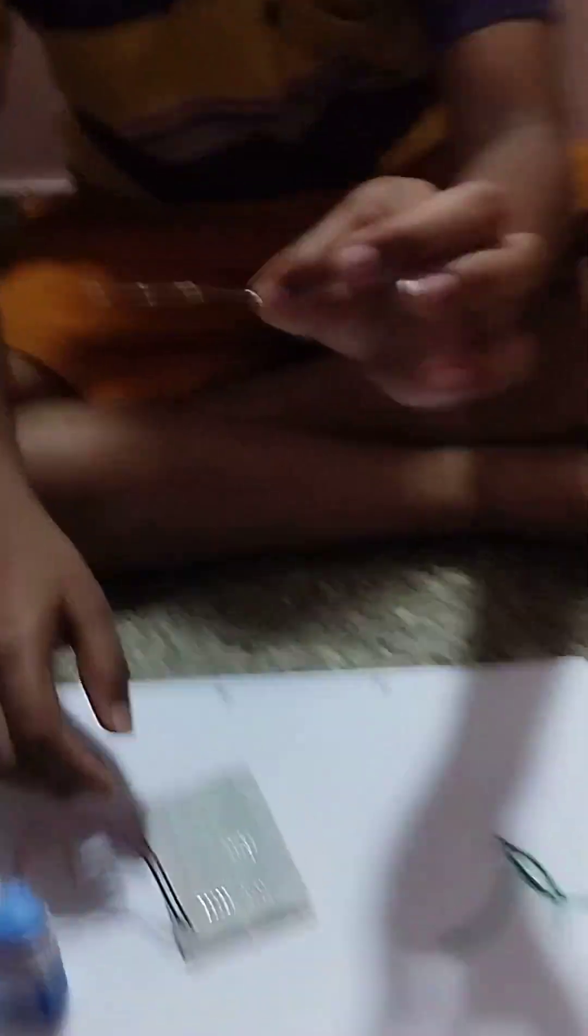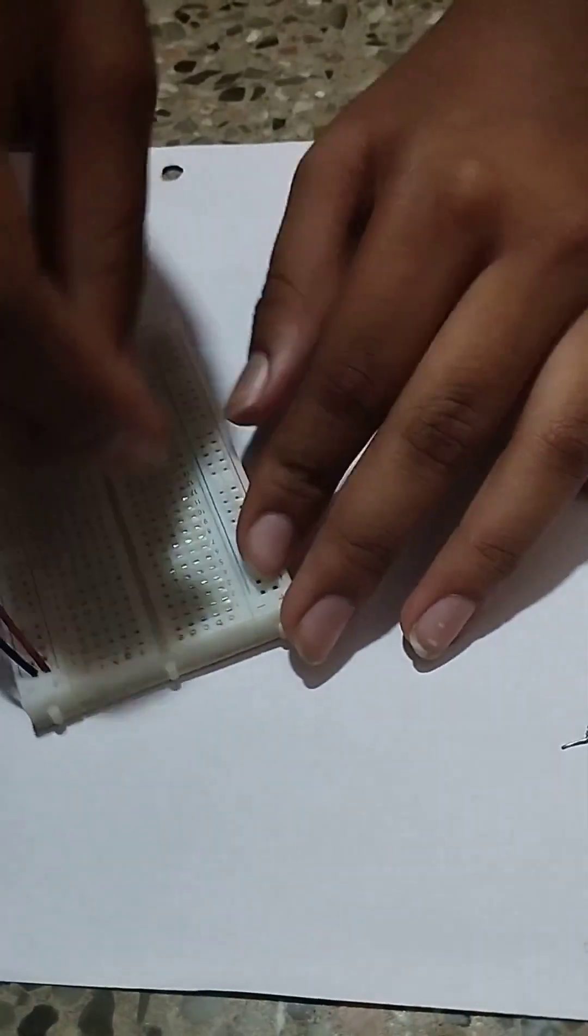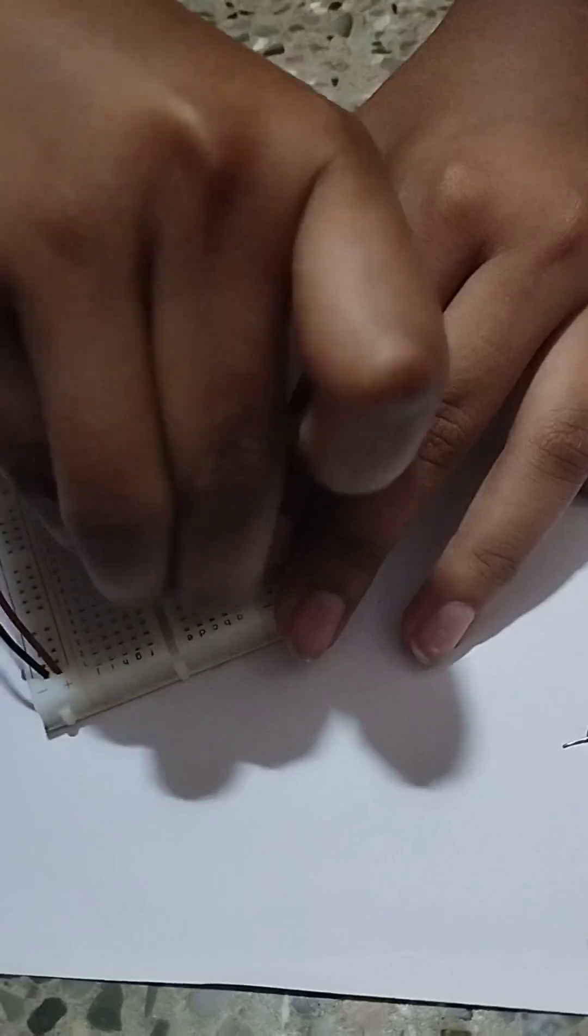Then take a resistor of a color code red, red, brown and golden like this. And connect it to the first row over here in the A column. So A first row and A column.